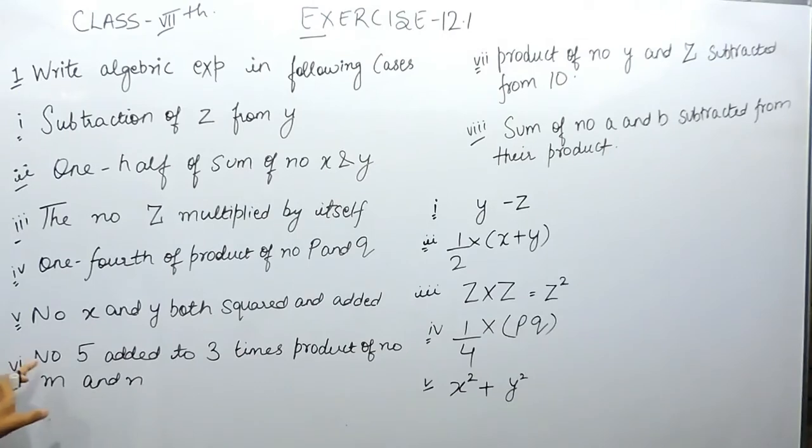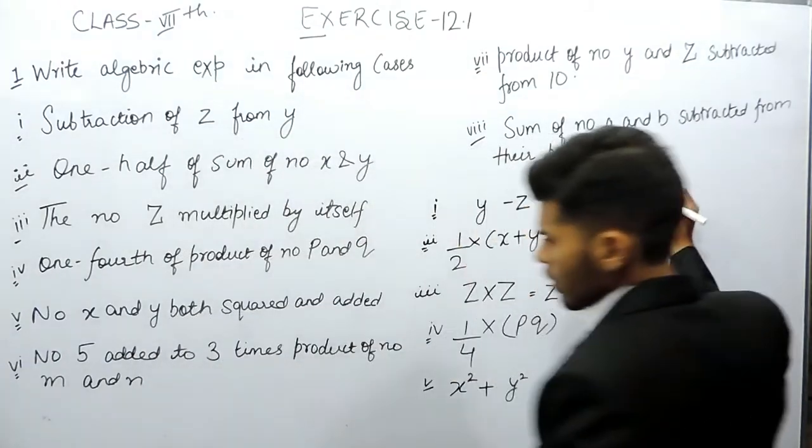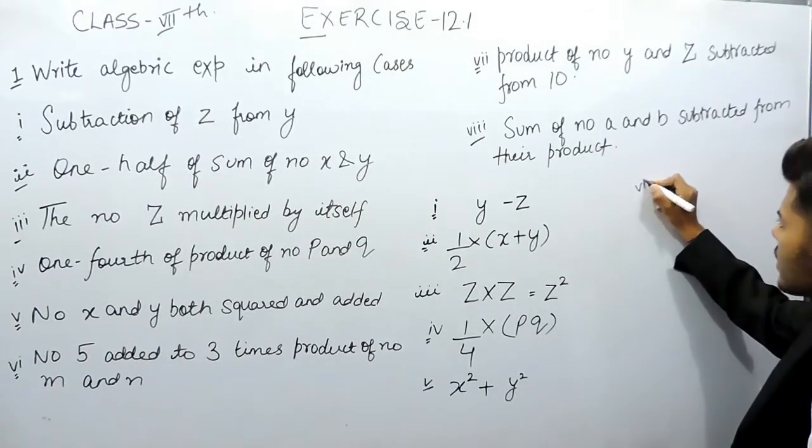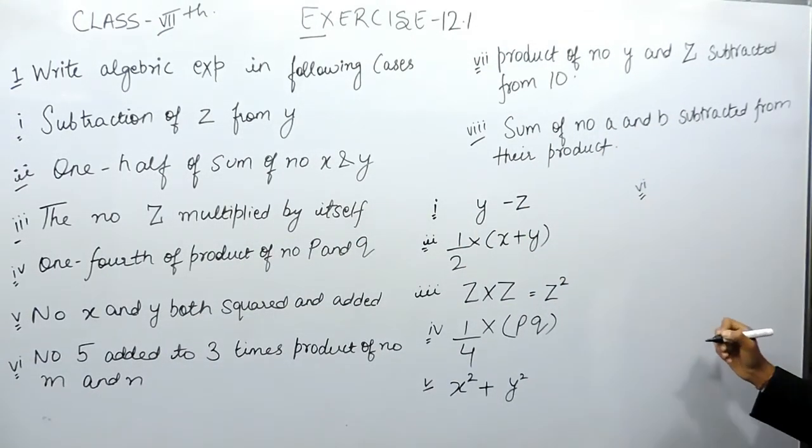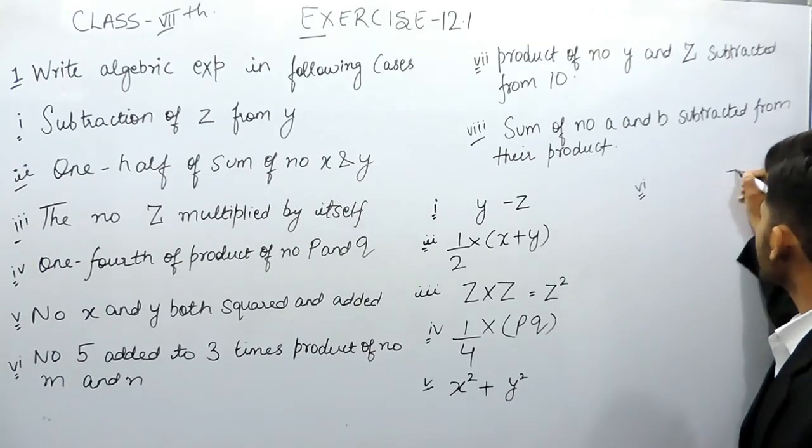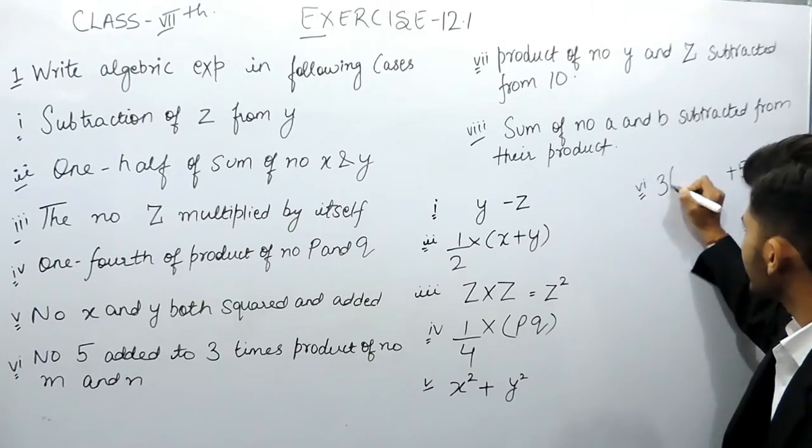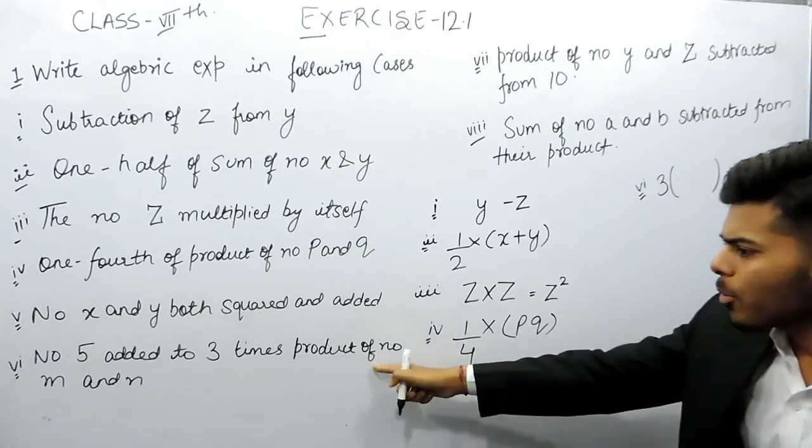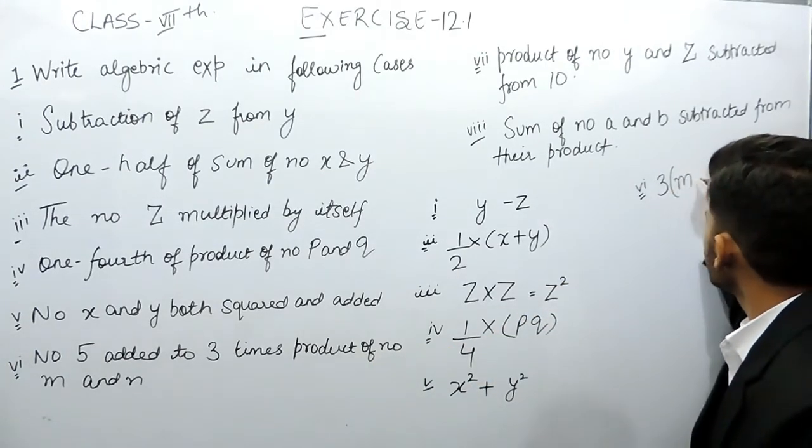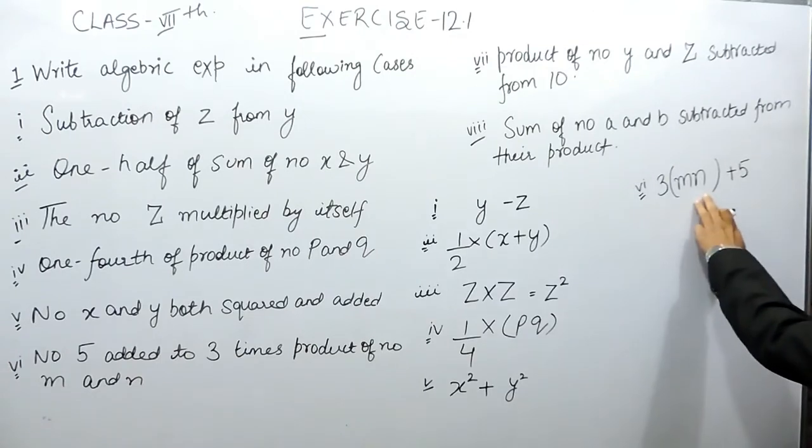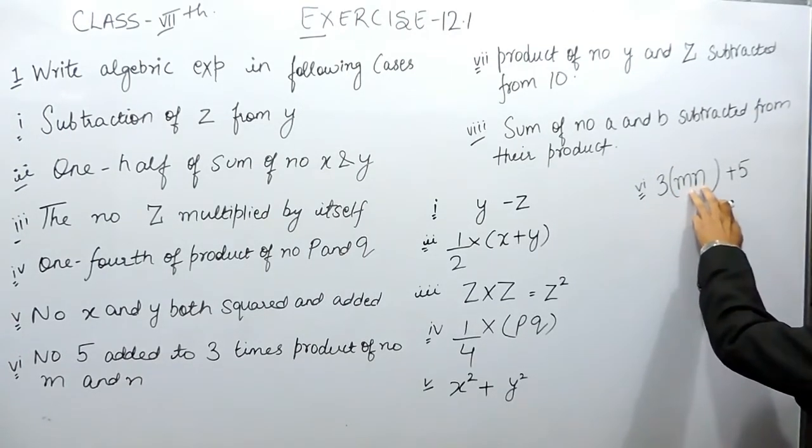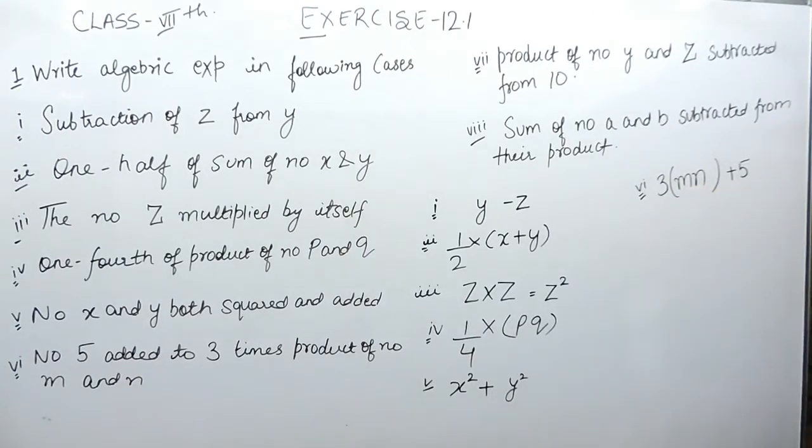Part 6 says number 5 added to 3 times the product of m and n. And it says that 5 added to means plus 5. 3 times the product of m and n. So 3 times the product of m and n and we add 5 to it. So this is the answer.